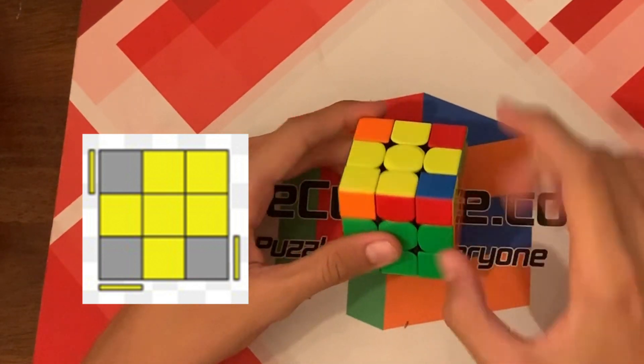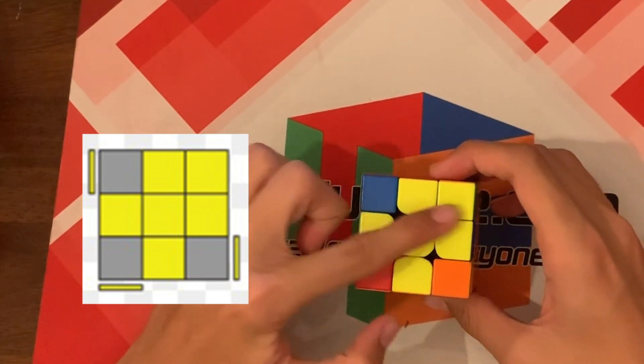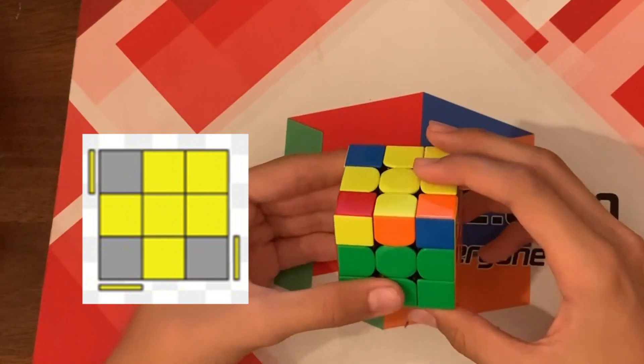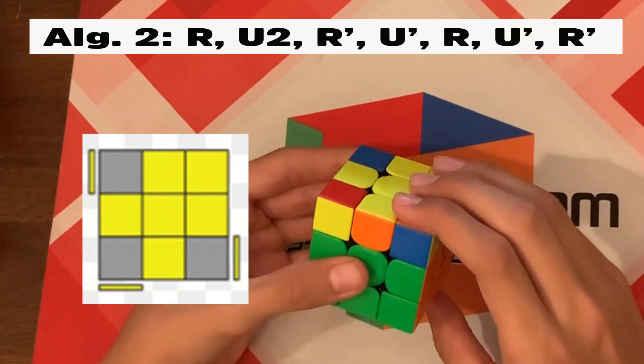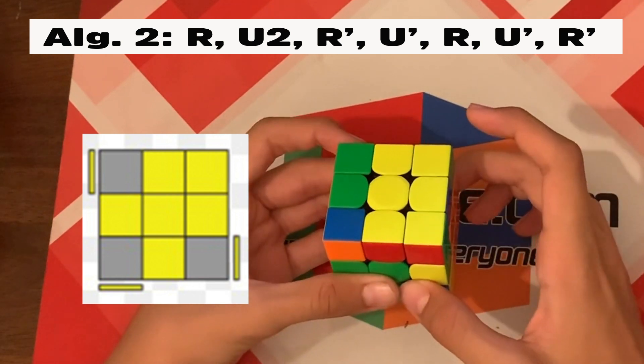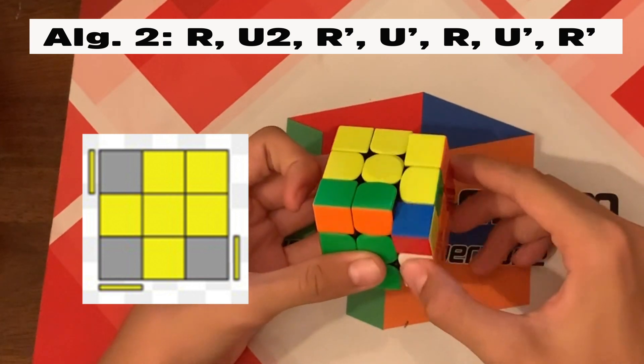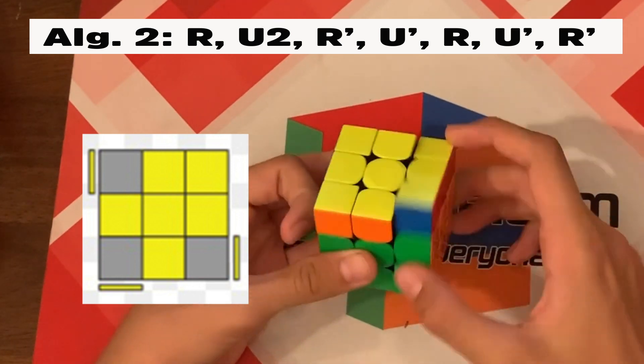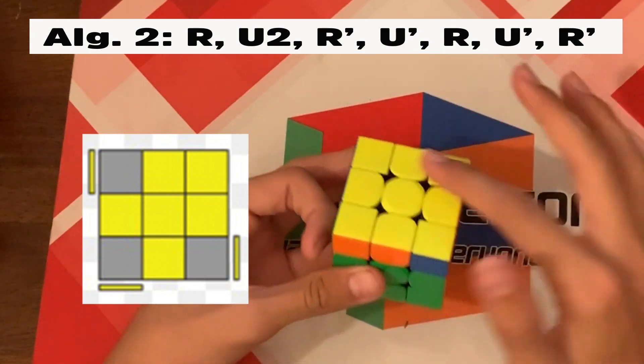So now if your yellow face looks like this, notice there's no yellow here. So if it looks like this, you want to hold it like this. And do algorithm two, which is R U 2 R prime U prime R U prime R prime. And then you'll have the yellow.